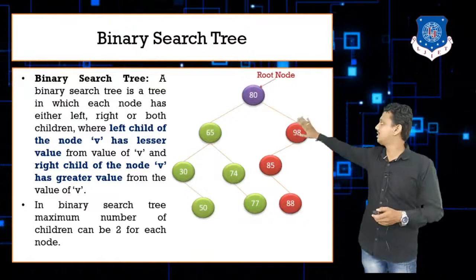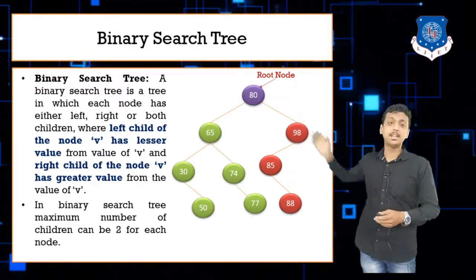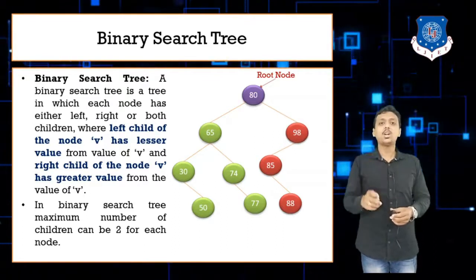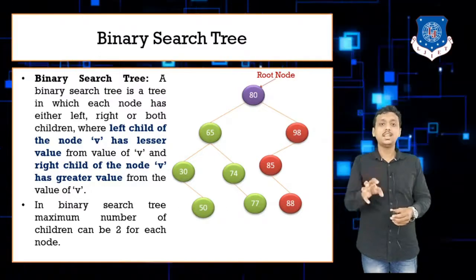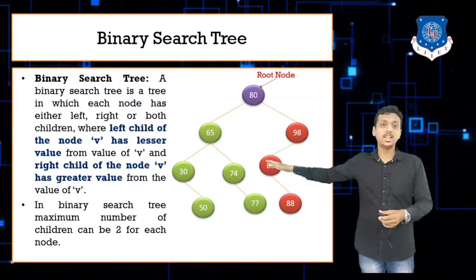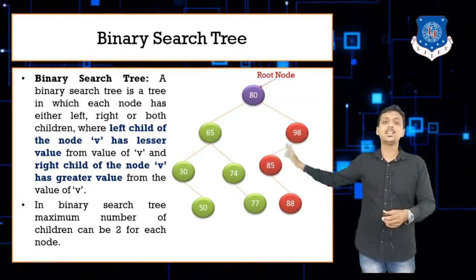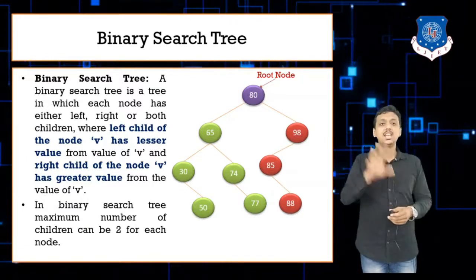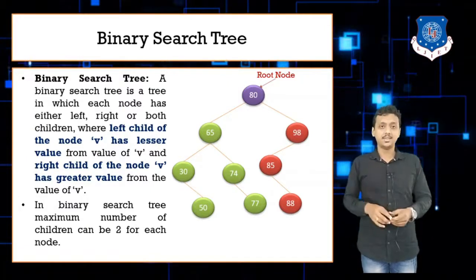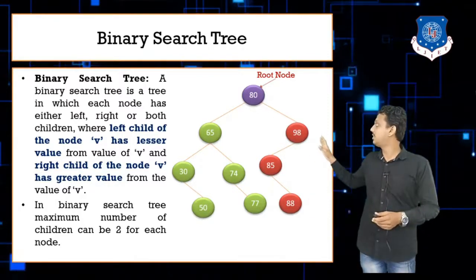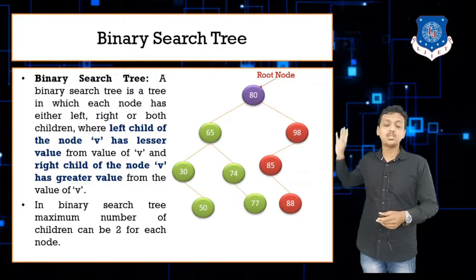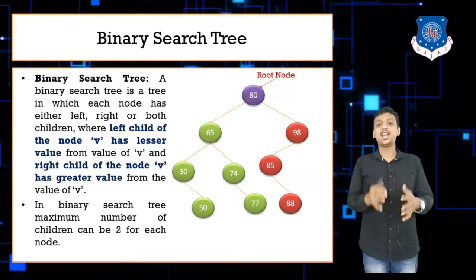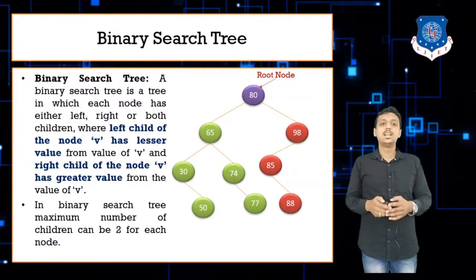Here in this example, the root node is 80. Whatever values are smaller than 80 are situated on the left side, and values larger than 80 are on the right side. I am highlighting these with green and red colors. You can see that 65 is smaller than 80, so it's on the left side, and 98 is greater than 80, so it is on the right side.